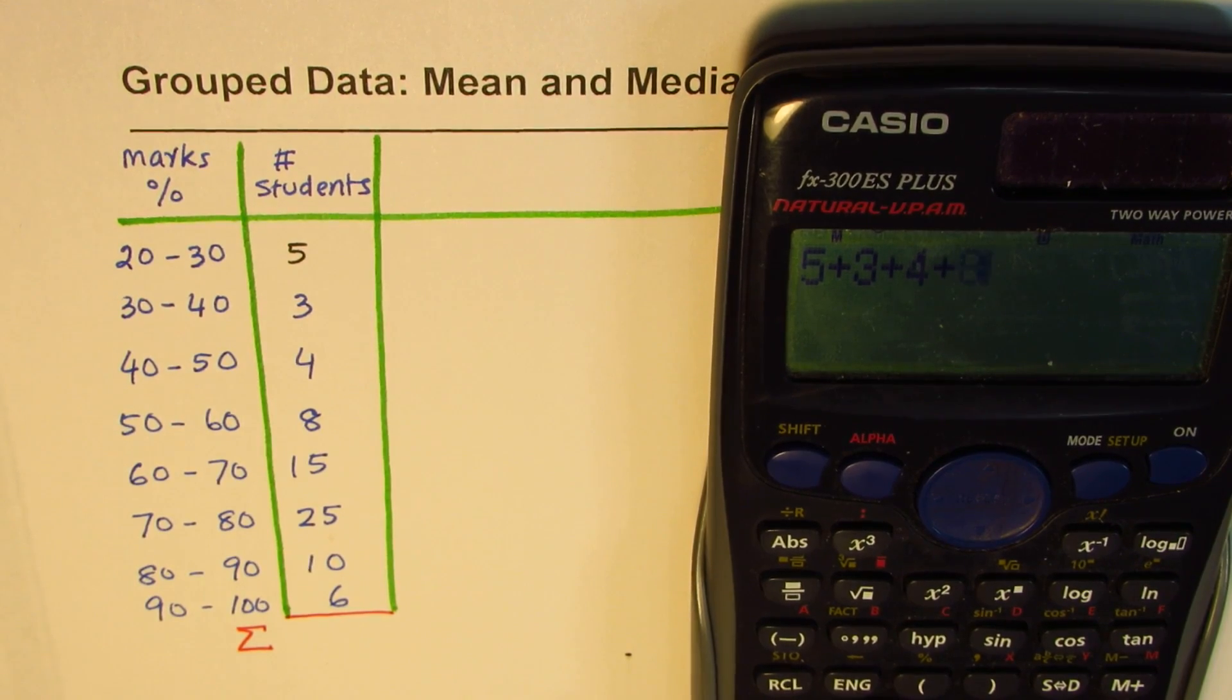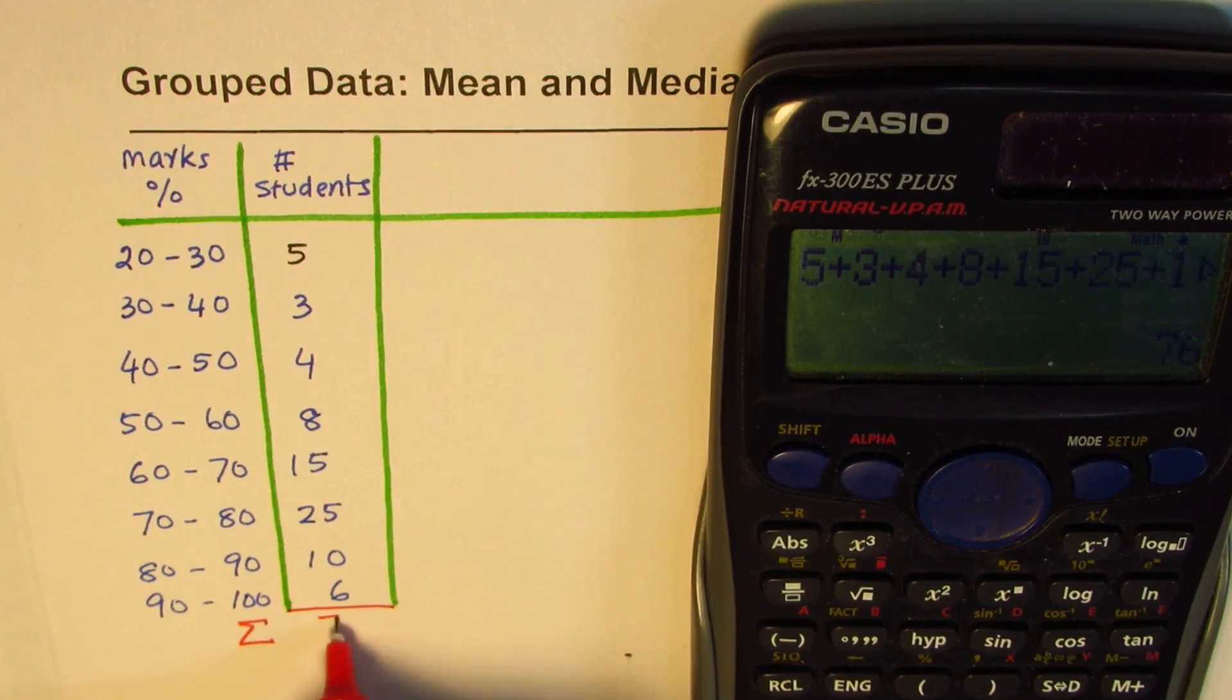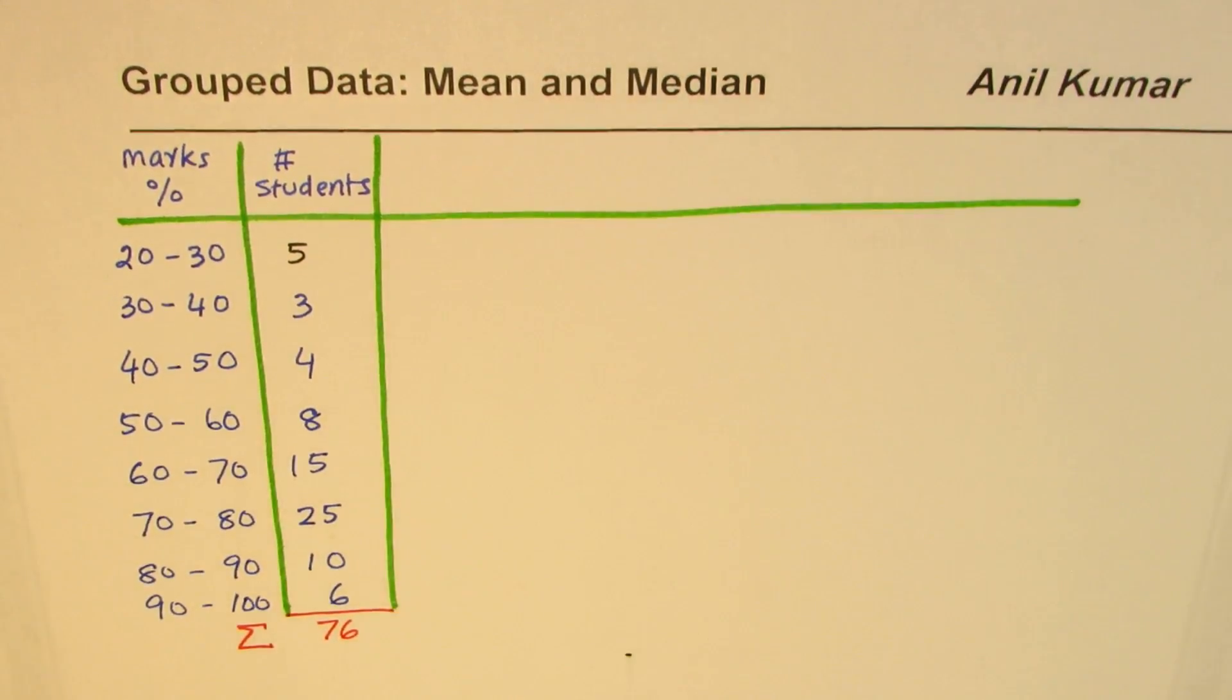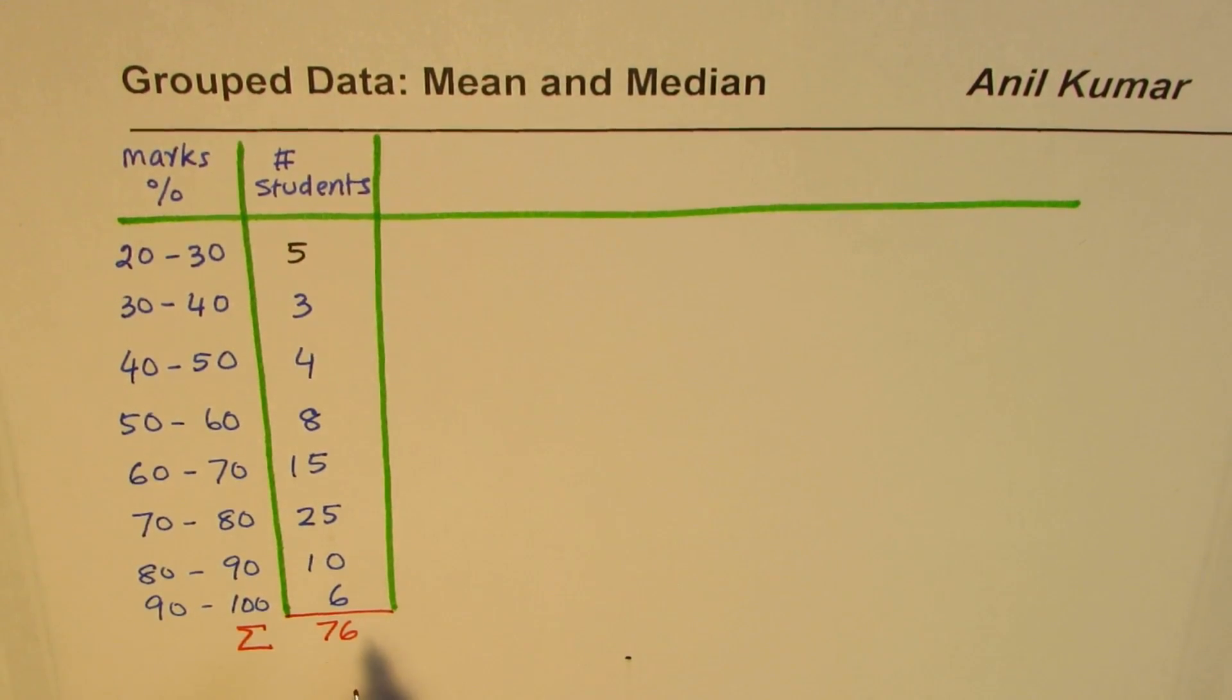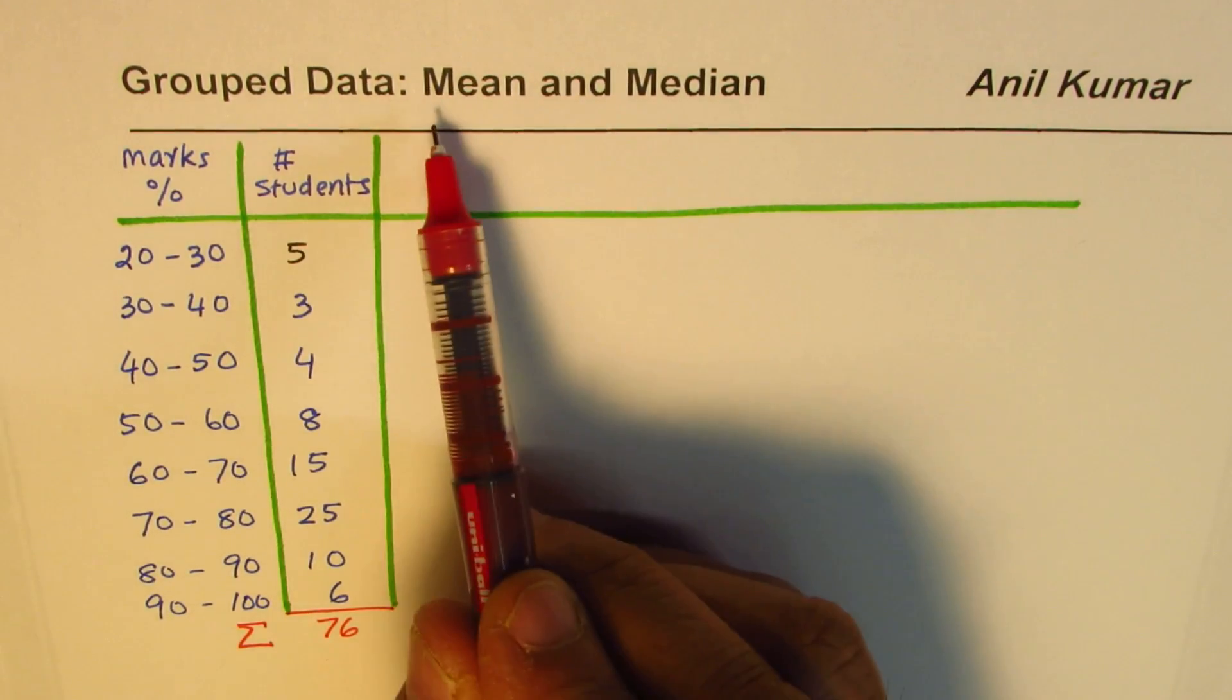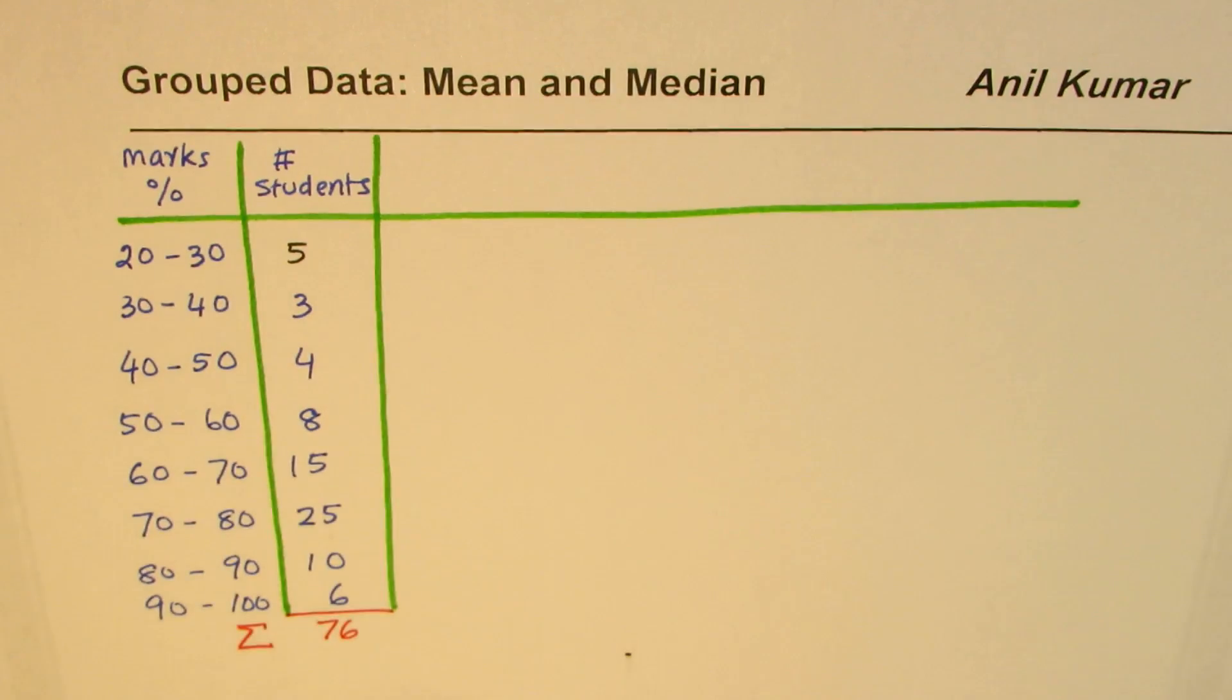So let's add this up: 5 plus 3 plus 4 plus 8 plus 15 plus 25 plus 10 plus 6 equals 76. 76 is the total number of students for which we have information.